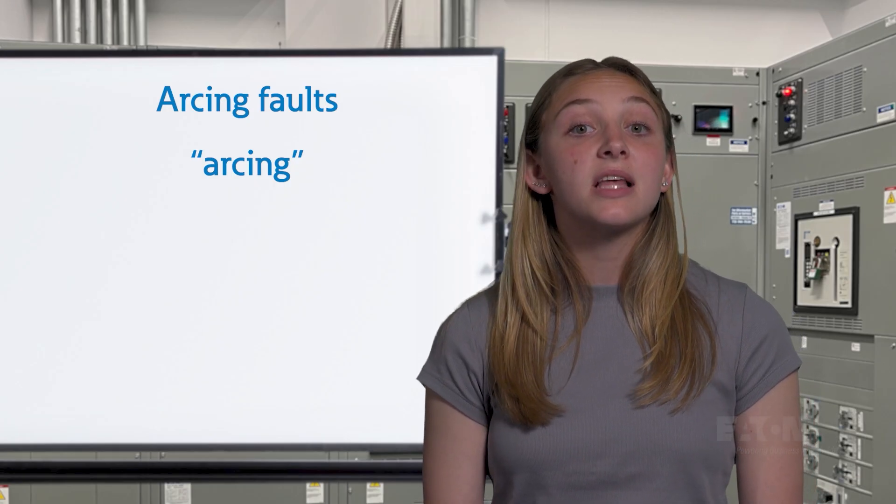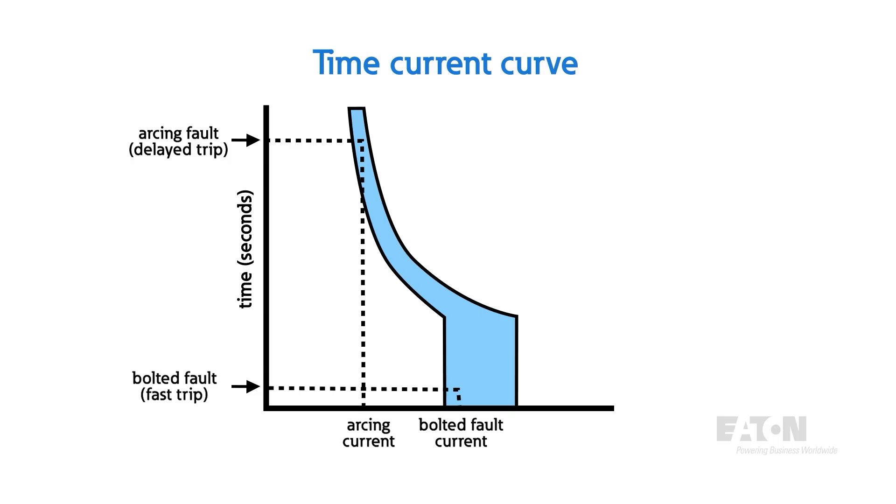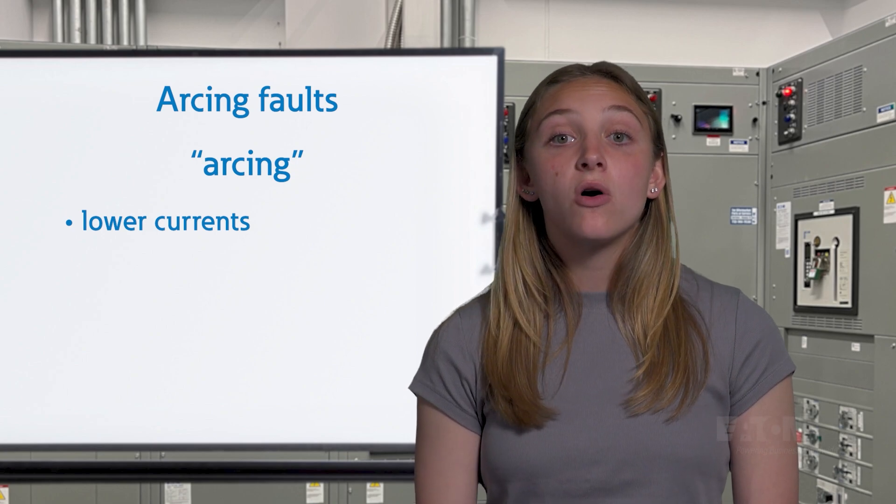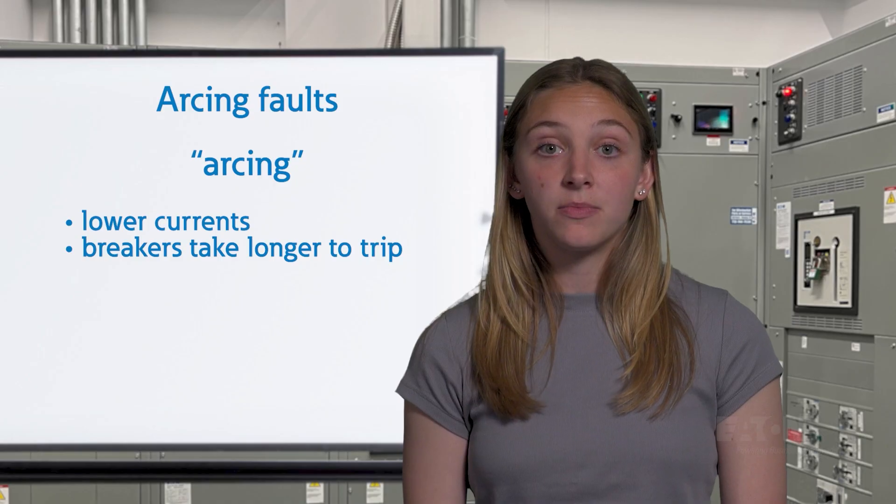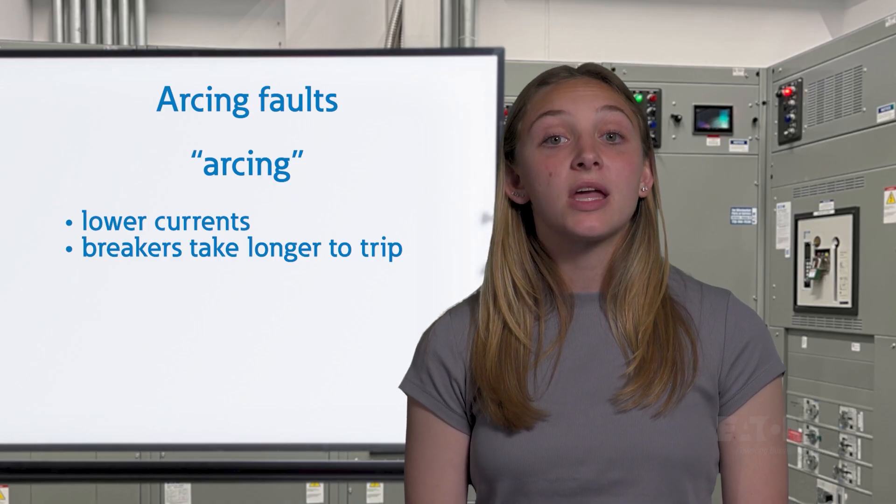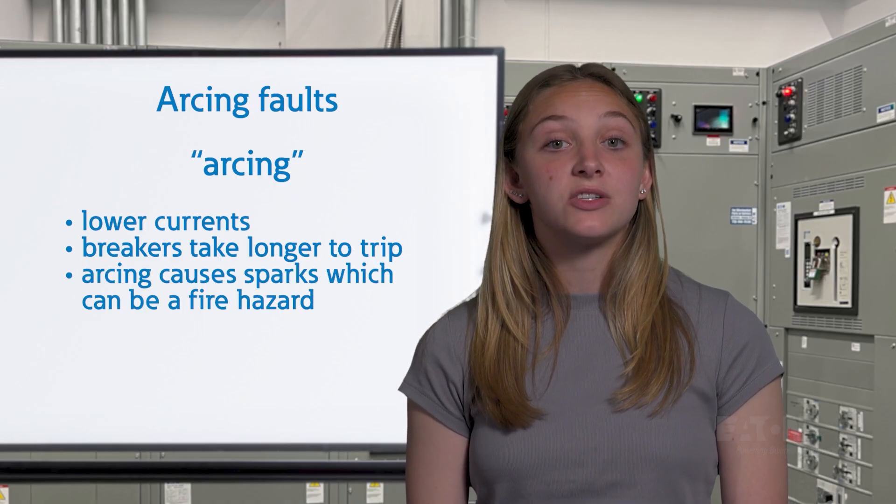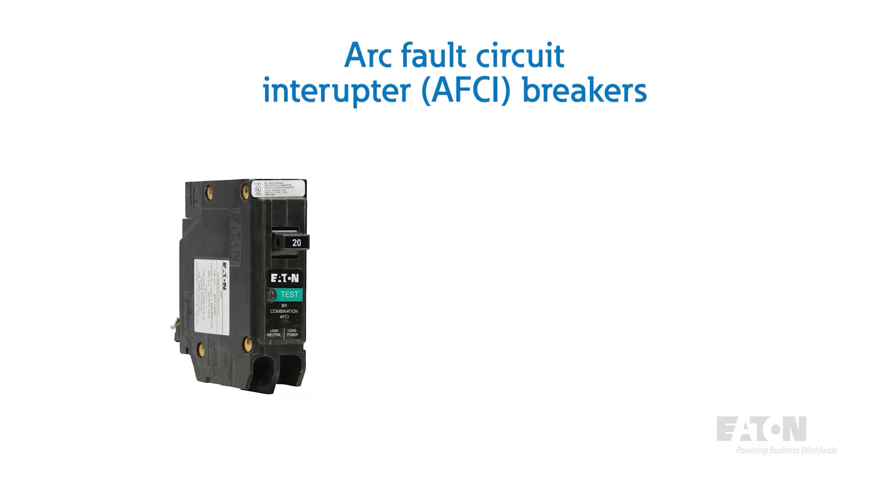Arcs have high resistance since they have to go through air and this results in lower currents. While that may seem safer, there is still current flowing where it shouldn't, and it also means that it will take regular breakers much, much longer to trip. During this time, the arcing action forms sparks that create a dangerous fire hazard.